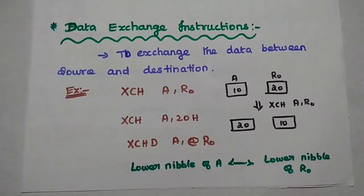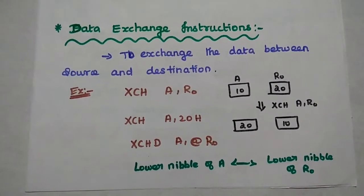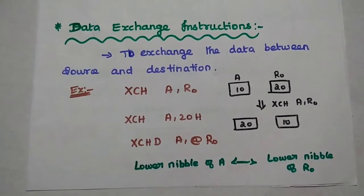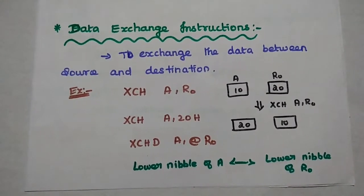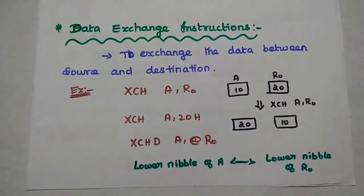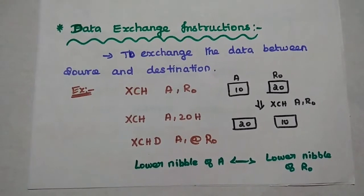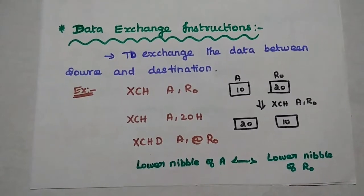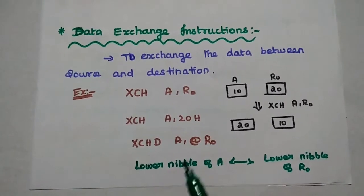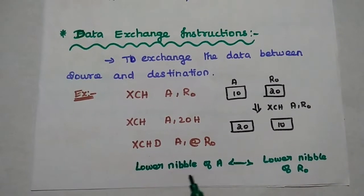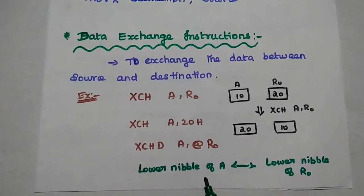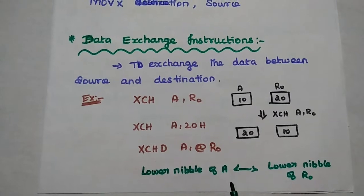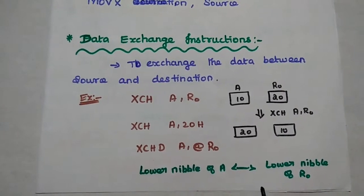The last data transfer instruction is the data exchange instruction. It is used to exchange the data between source and destination. For example, XCH A, R0 means the contents of register R0 and accumulator are both exchanged. XCHD is used to exchange only the lower nibble of the registers — the upper nibble values are not affected.